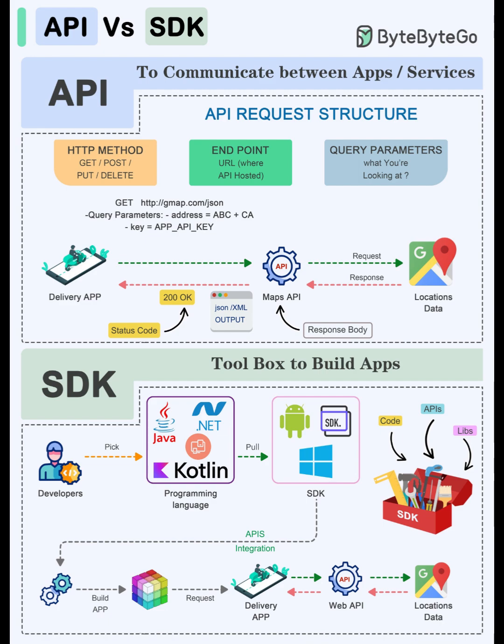When calling a REST API, three things matter most: method, endpoint, and parameters. Methods map intent — GET to read, POST to create, PUT to update, DELETE to remove.